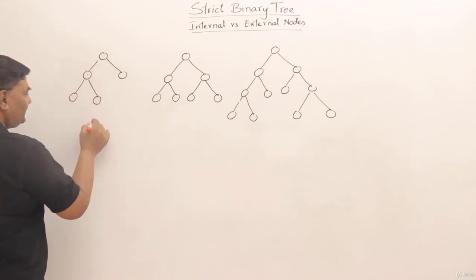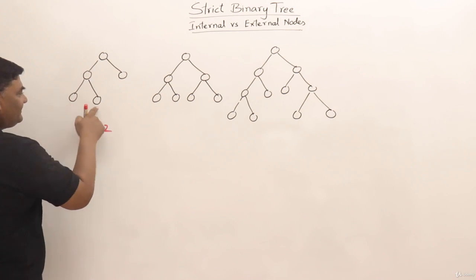So this strict binary tree, how many internal nodes? 1 and 2, 2 internal nodes are there. How many external nodes? 1, 2, 3. These are leaf nodes.